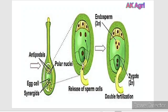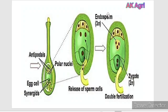One sperm cell fuses with the egg cell and produces a zygote, which is diploid in condition. The further development of this zygote leads to the development of the embryo. The other sperm cell fuses with the two polar nuclei and produces the primary endosperm nucleus initially, and the further development of this primary endosperm nucleus leads to the development of endosperm, which is triploid in nature.